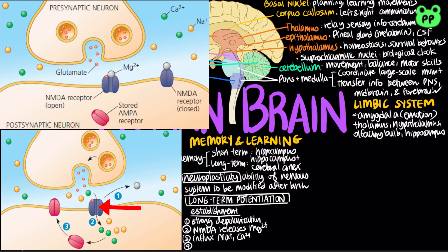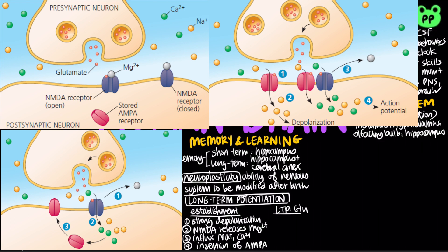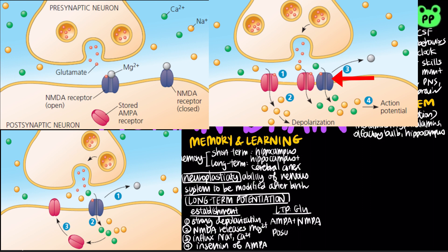The influx of calcium ions triggers the insertion of stored AMPA glutamate receptors into the postsynaptic membrane. In synapses that exhibit long-term potentiation, glutamate release activates AMPA receptors that trigger depolarization, which unblocks the NMDA receptors. Together, the AMPA and NMDA receptors trigger postsynaptic potentials strong enough to initiate action potentials without input from other synapses. The result is a stable increase in the size of postsynaptic potentials, thought to represent one of the fundamental processes by which memories are stored and learning takes place.